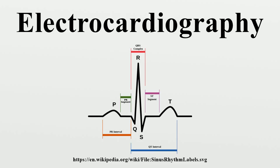His electrocardiograph machine consisted of a Lippmann capillary electrometer fixed to a projector. The trace from the heartbeat was projected onto a photographic plate that was itself fixed to a toy train, which allowed a heartbeat to be recorded in real time.